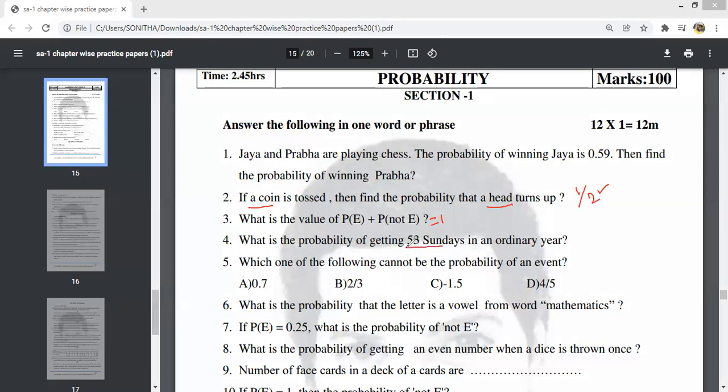What is the probability of getting 53 Sundays in an ordinary year? This is a very important question. In general, an ordinary year is 365 days. Divide by 7 days per week: 7 into 365 gives 52 with remainder 1.